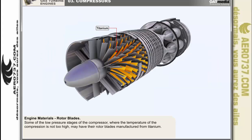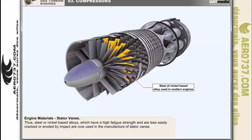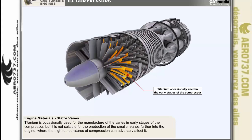Some of the low pressure stages where the temperature of compression is not too high may have rotor blades manufactured from titanium. As higher temperature titanium alloys are produced, these alloys are progressively displacing nickel alloys in rotor blades at the high pressure end. Early engines used aluminium alloys in the manufacture of stator vanes, but this did not withstand foreign object ingestion damage well. Steel or nickel-based alloys with high fatigue strength and resistance to cracking or erosion by impact are now used. Titanium is occasionally used for vanes in the early compressor stages, but is not suitable for the smaller vanes further into the engine where high temperatures of compression can adversely affect it.